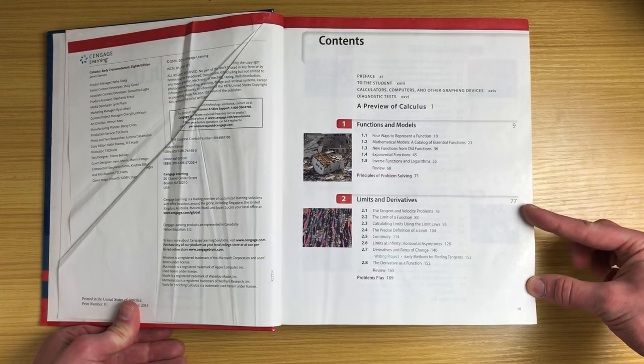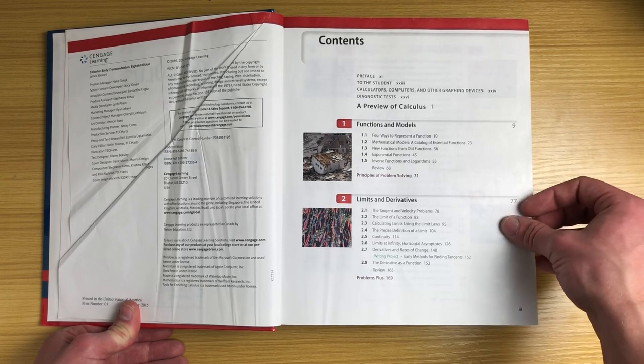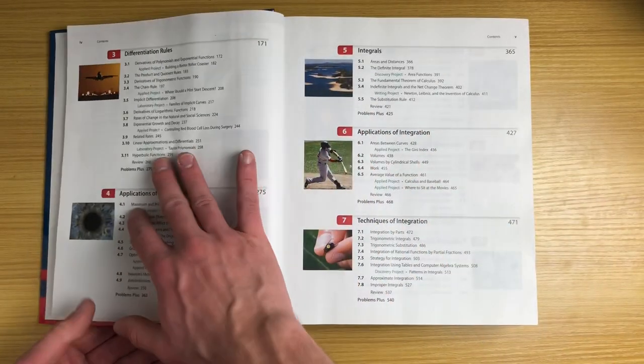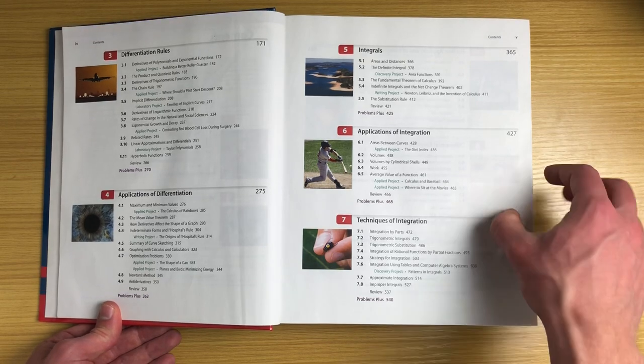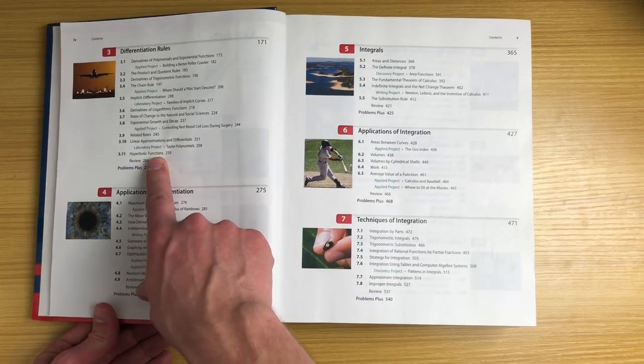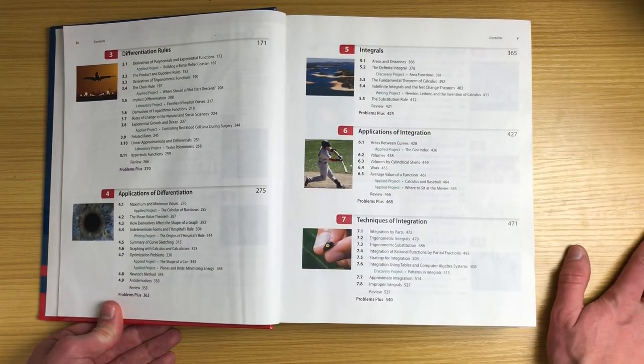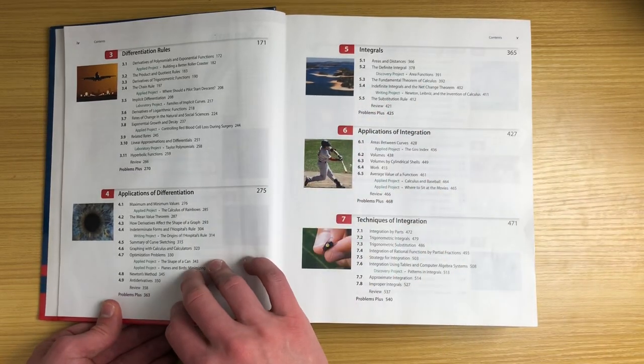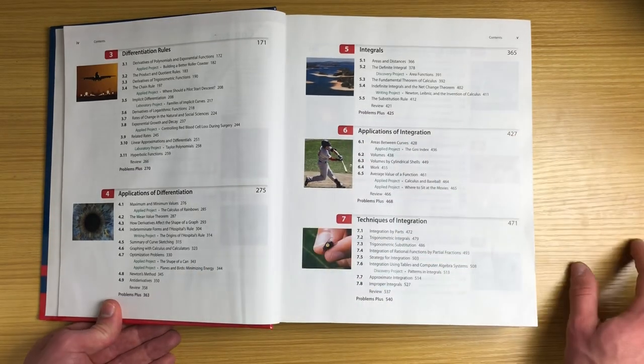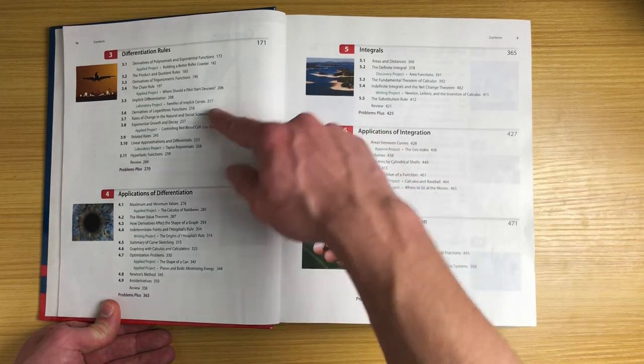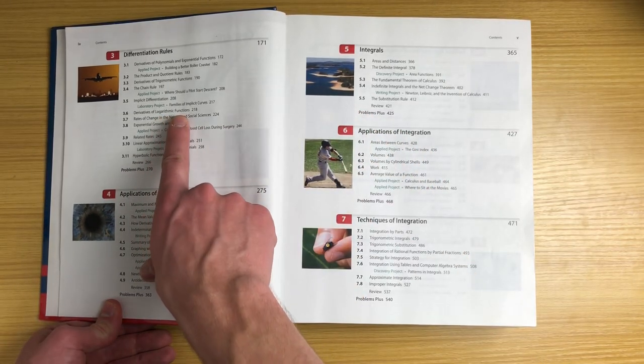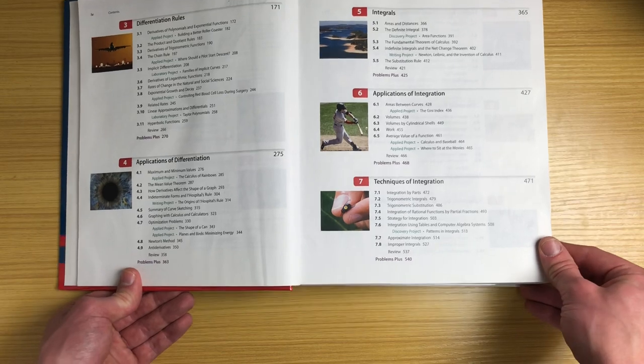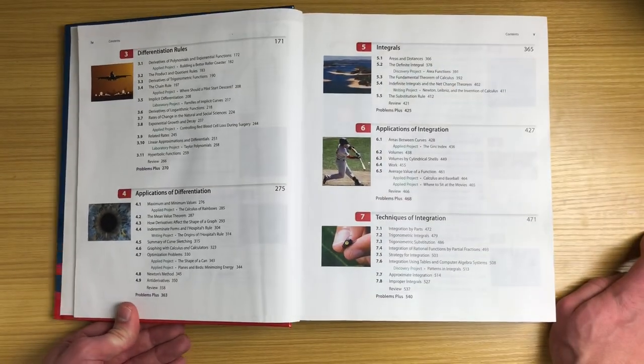We're really starting with the actual calculus here in chapter two, limits and derivatives. The main point of calculus is limits, derivatives, and integrals. Chapter three, big section on differentiation rules. One thing I like, it does include hyperbolic functions. I know not every single calculus course includes these hyperbolic functions. This might be out of order depending on where you go to school. Sometimes in calc one you do derivatives of logarithms, sometimes in calc two. This book has them all in chapter three, which makes a lot of sense. Just put all the derivative rules in one chapter.